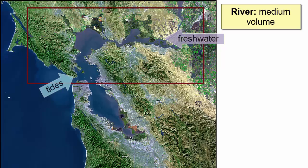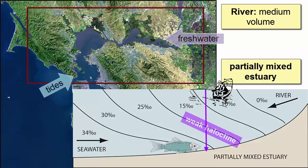Let's review some examples. Starting with San Francisco's North Bay, we have a medium-volume river — the Sacramento River — which mixes with moderate tides. The result is a partially mixed estuary. We have a weak halocline here, and the deep water is always a bit saltier than the surface water.